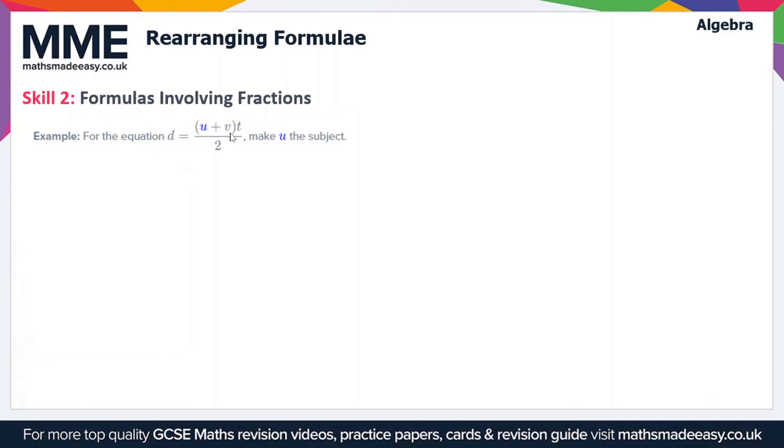Let's just rewrite the formula up here. We're going to need quite a bit of space. We've got d = (u+v)t/2. The first thing we want to do is remove the fraction, and the way we're going to do that is by multiplying by 2. We'll get rid of the denominator here, so this will give us 2d = (u+v)t.